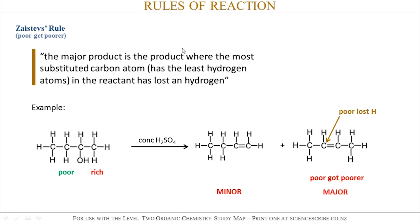Just like with Markovnikov's rule, don't just write 'poor get poorer' — use wording that's more appropriate, as 'poor get poorer' is just a way to help you remember Zaitsev's rule. The major product is the product with the most substituted carbon atom, which is the one with the least hydrogen atoms, and the reactant has lost another hydrogen.